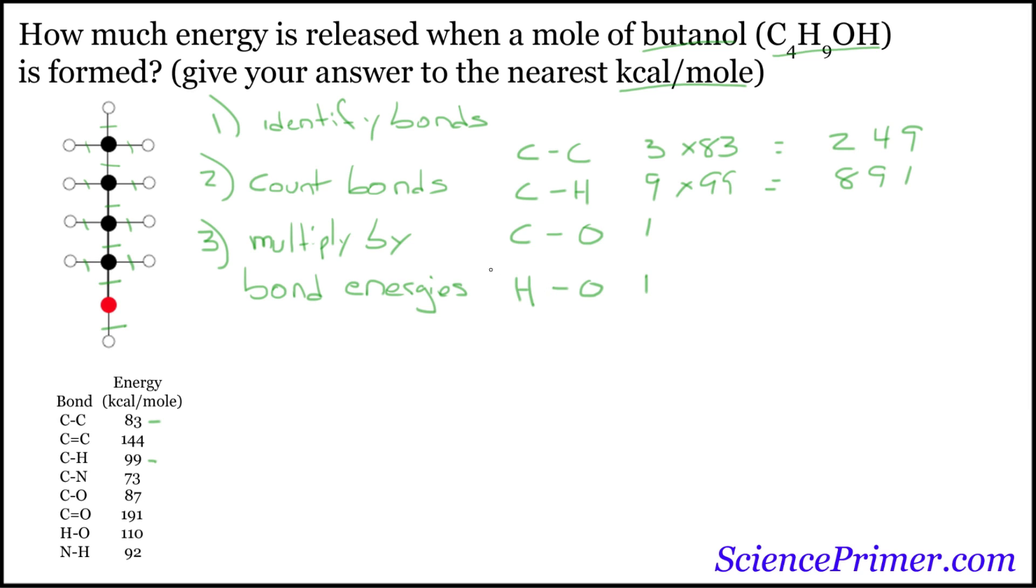We have 1 carbon-oxygen bond, 87 kilocalories per mole. 1 times 87 equals 87. And then hydrogen-oxygen is 110. So it's 1 times 110, which equals 110.